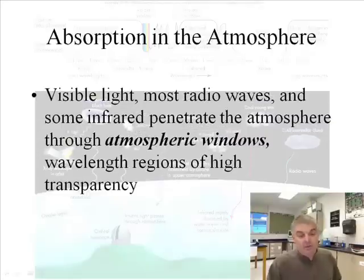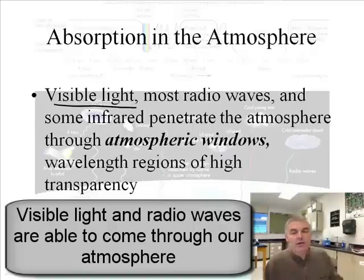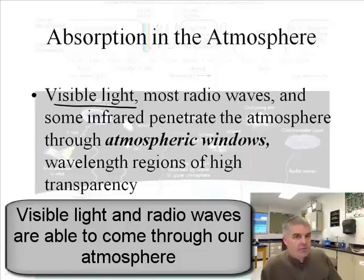Now, the thing that does make it to the Earth, of course, is visible light, ROYGBIV. Most radio waves and some infrared penetrate the atmosphere through what's called the atmospheric window, wavelength regions of high transparency.